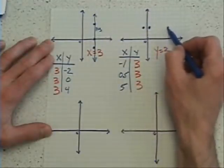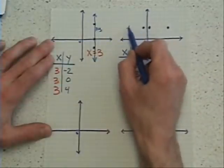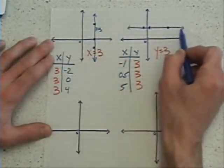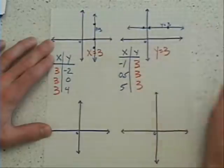And 5 to the right. 1, 2, 3, 4, 5, and 3 up. Again, notice that you're going to find yourself all 3 points lining up correctly. And that would be a y equals 3 line.